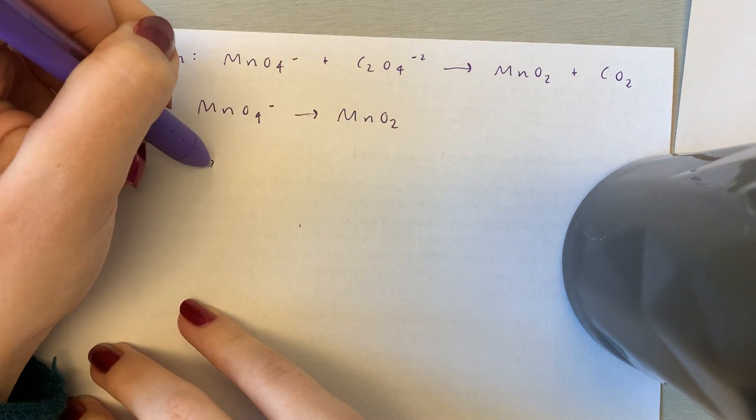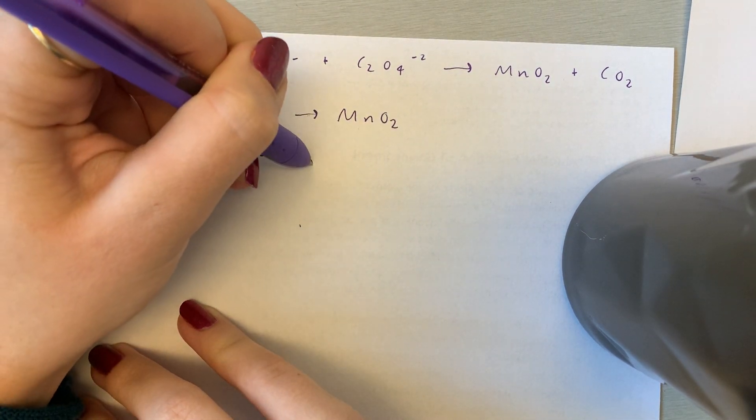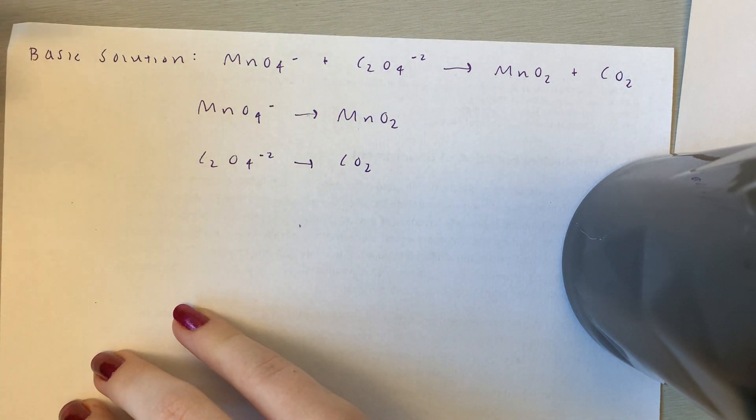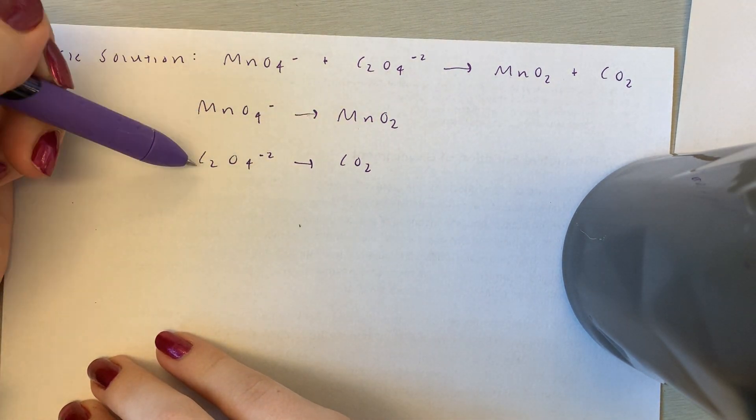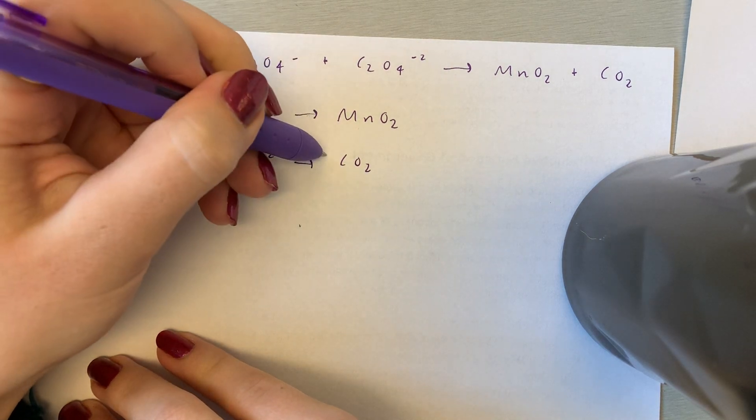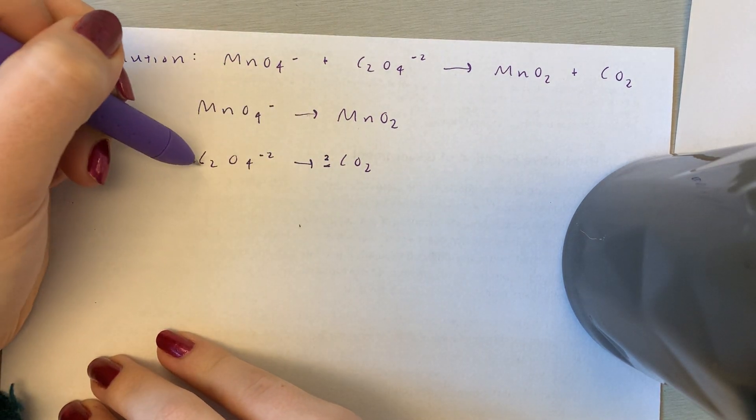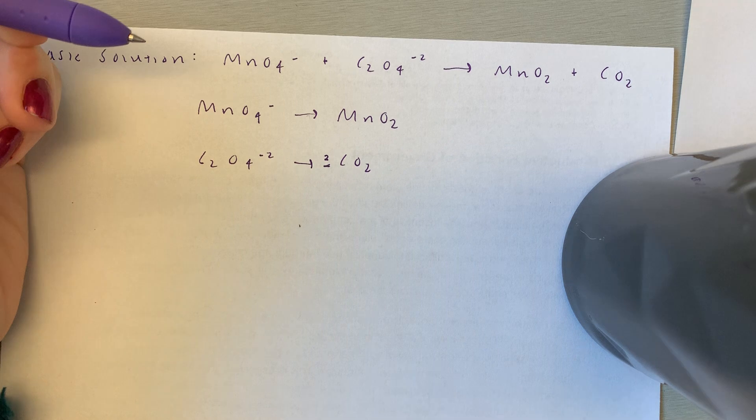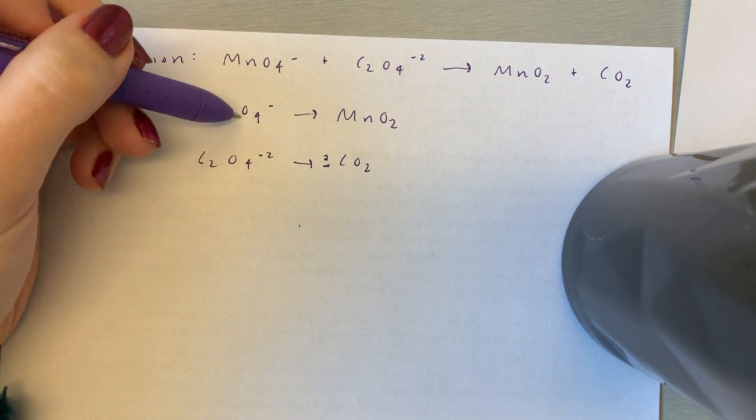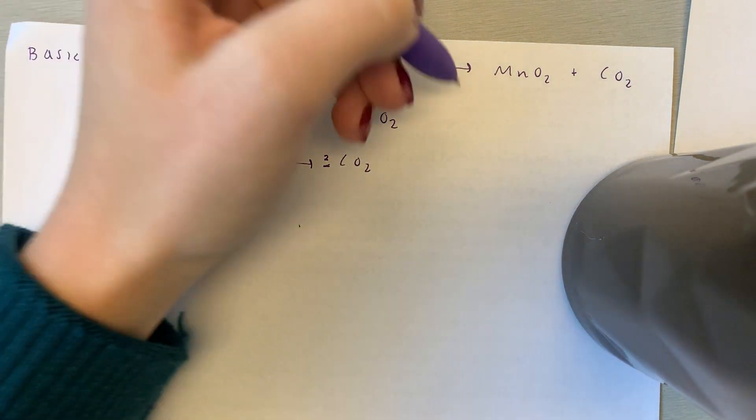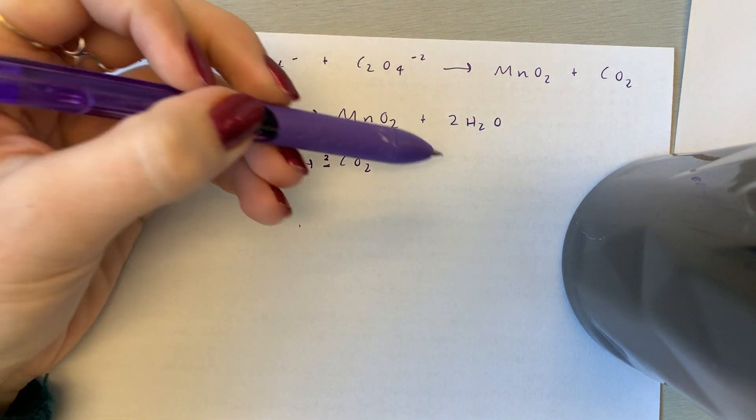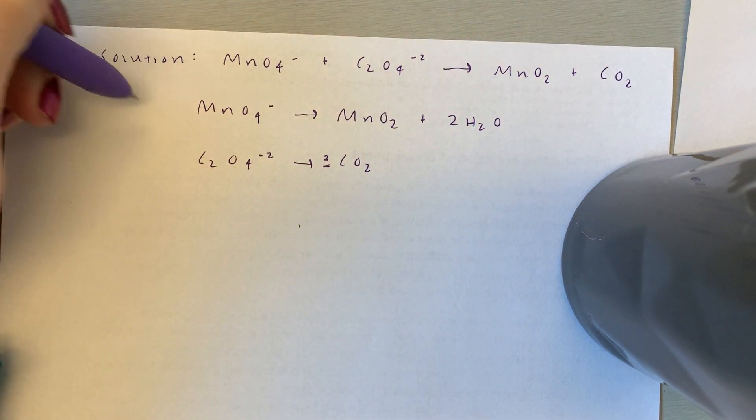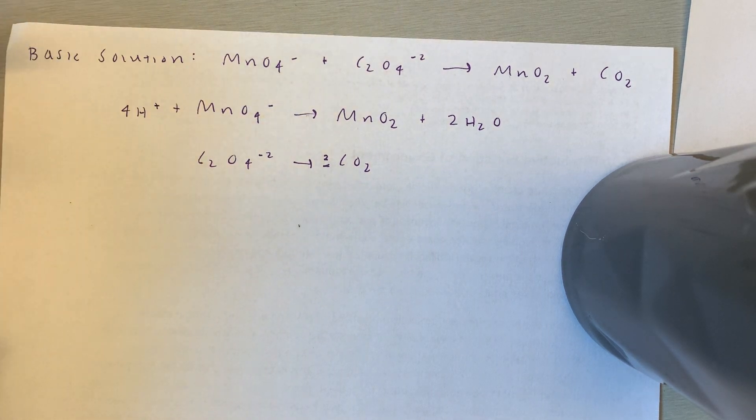This is the most fun part. CO2. Okay, so now make sure everything's balanced. 1 MN, 1 MN. There's two carbons here, so we've got to put a two in front of this. So there's two carbons, two carbons. Now let's balance the oxygens. There's four on this side and two on this side. So we're going to add two water molecules. But now there's four hydrogens on this side and none on this side. So we're going to add four hydrogen ions.